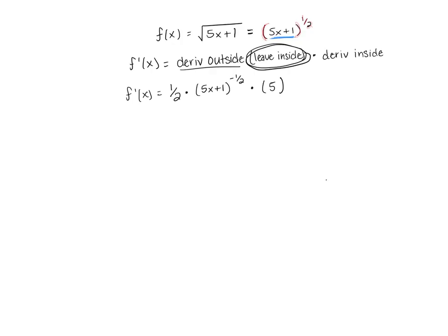And then we can just clean this up. So we'll have a 5 on the top of our fraction. We'll have a 2 on the bottom. And then this negative exponent moves that term to the bottom. And we can turn it back into a square root. So we'd have the square root of 5x plus 1 on the bottom. And this would be our derivative.